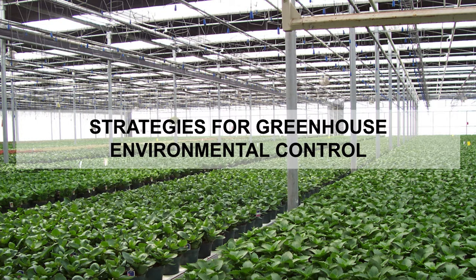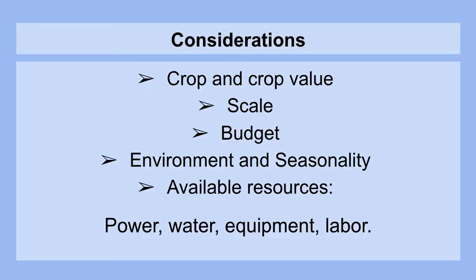Strategies for greenhouse environmental control. The important considerations when devising strategies are what crop you plan on growing and what value this crop has at market. You also have to consider the scale at which you will be operating, the budget available to you for setup, and the environment and the seasonality of your climate. It's also important to take a look at available resources — in other words, what is available in terms of power, water, equipment and labor, and what are their local costs.